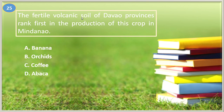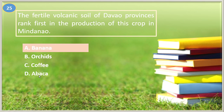Number twenty-five. The fertile volcanic soil of Davao provinces ranks first in the production of this crop in Mindanao: A. Banana, B. Orchids, C. Coffee, D. Abaca. The answer is letter A, Banana.